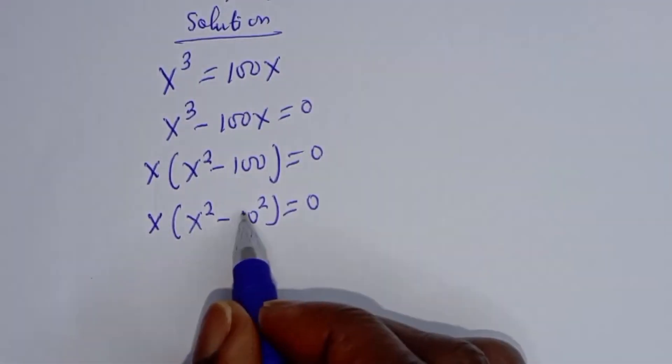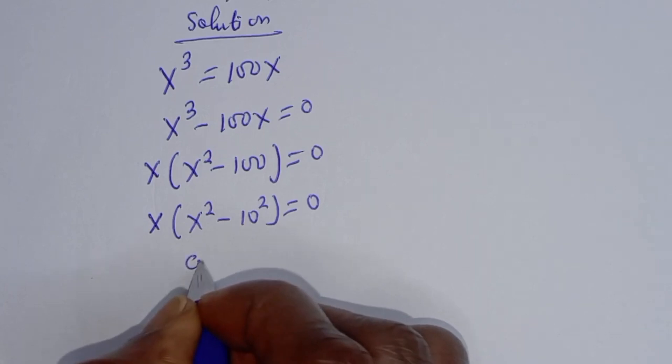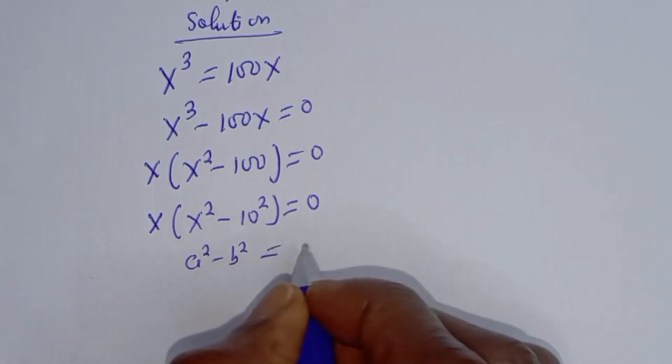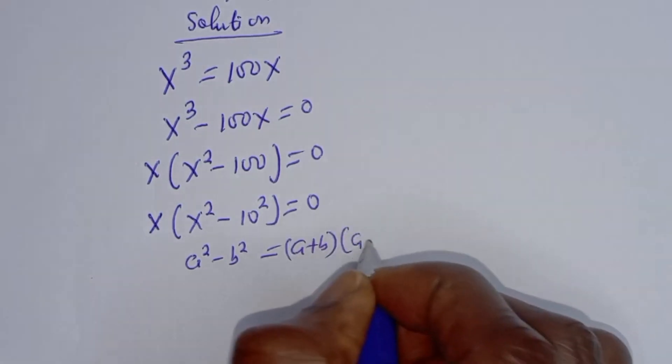This is in the form of a perfect square. If you have a squared minus b squared, this equals a plus b bracket a minus b.